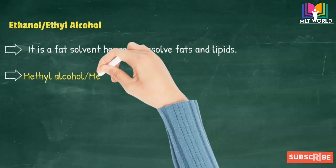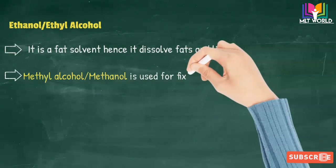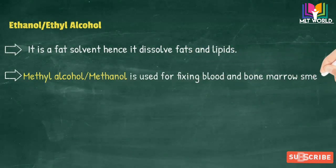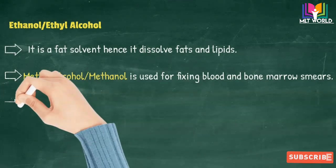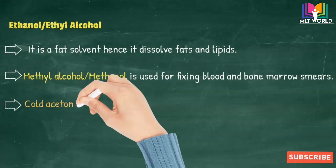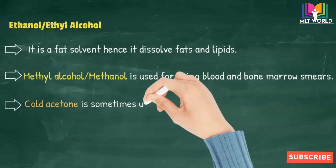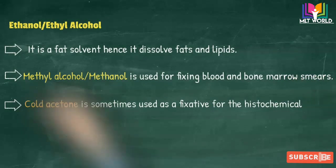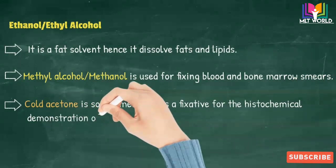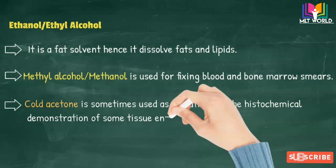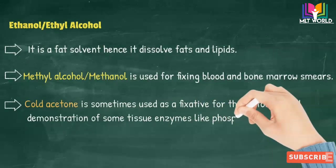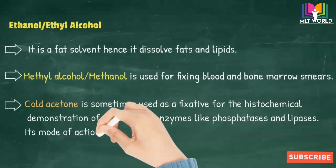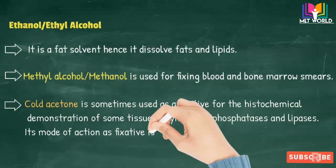Methyl alcohol or methanol is used for fixing blood films and bone marrow smears. Cold acetone is sometimes used as a fixative for the histochemical demonstration of some tissue enzymes like phosphatases and lipases, and its mode of action as a fixative is similar to that of alcohol—precipitating.